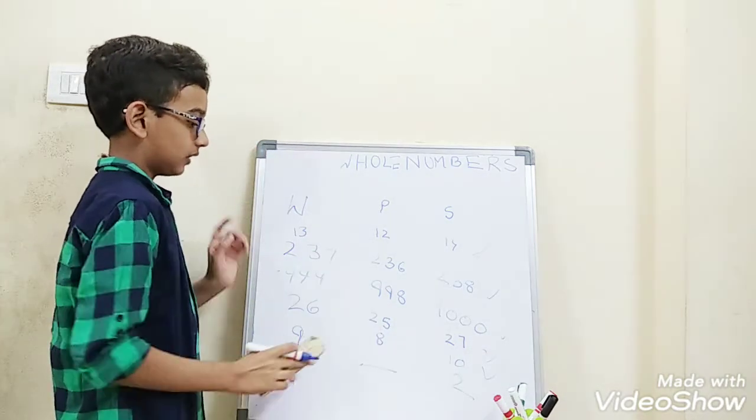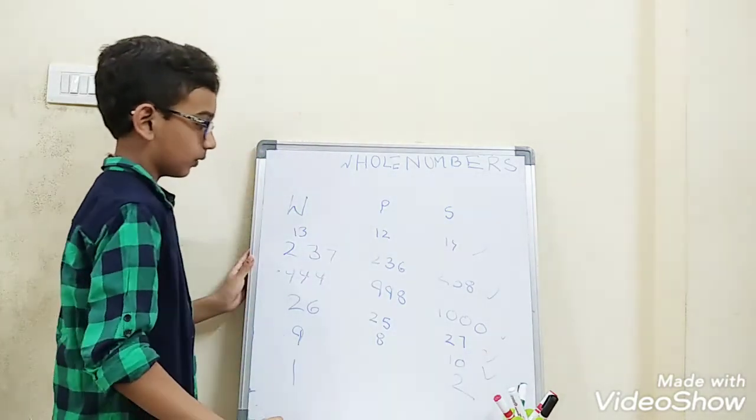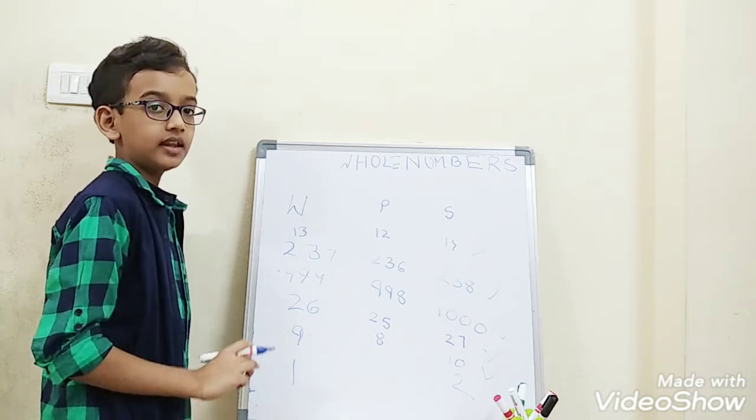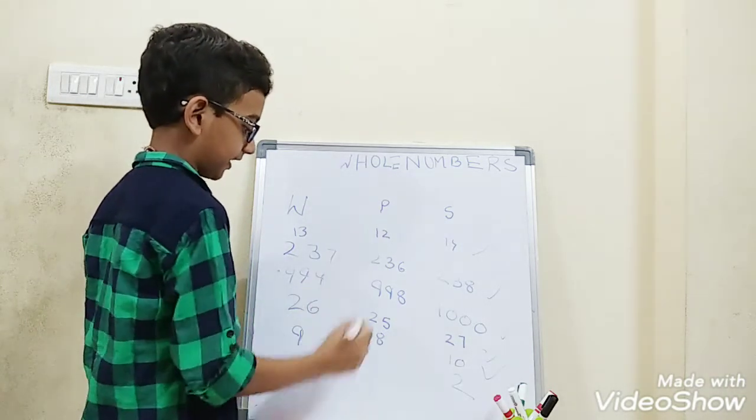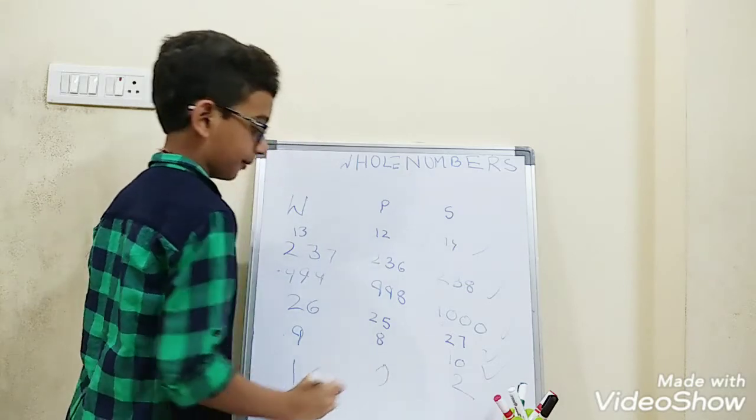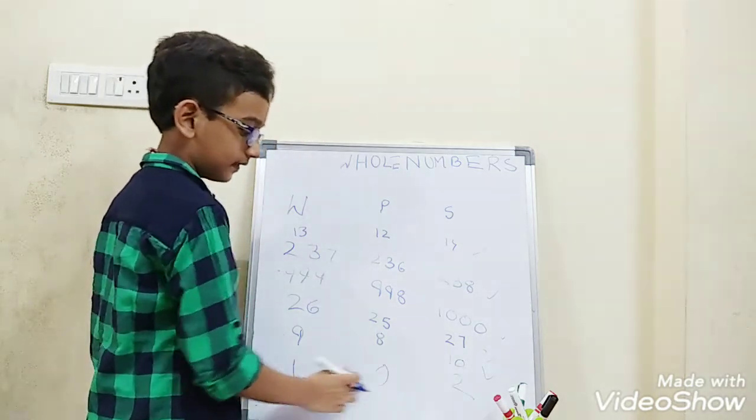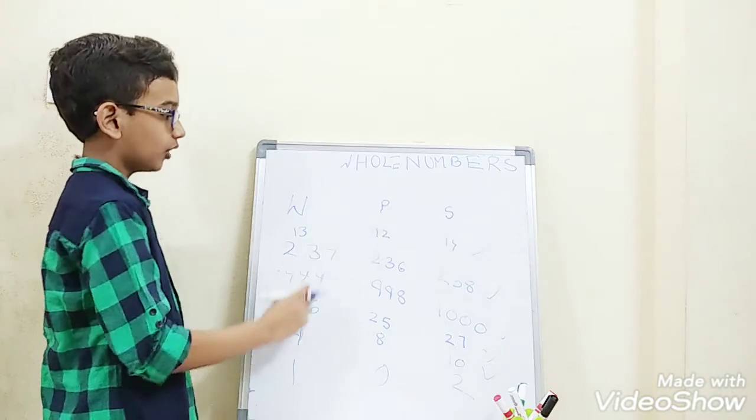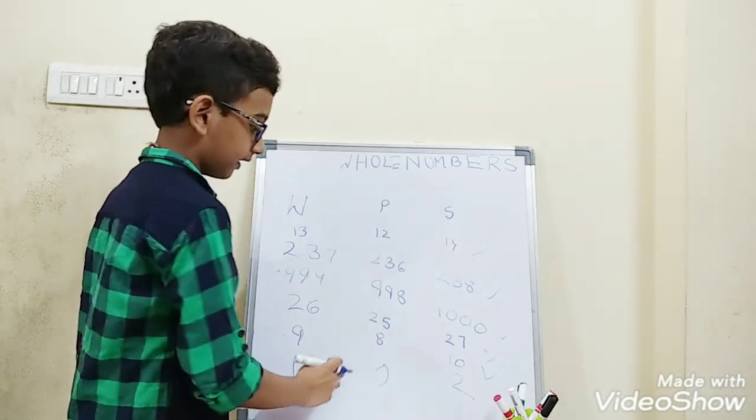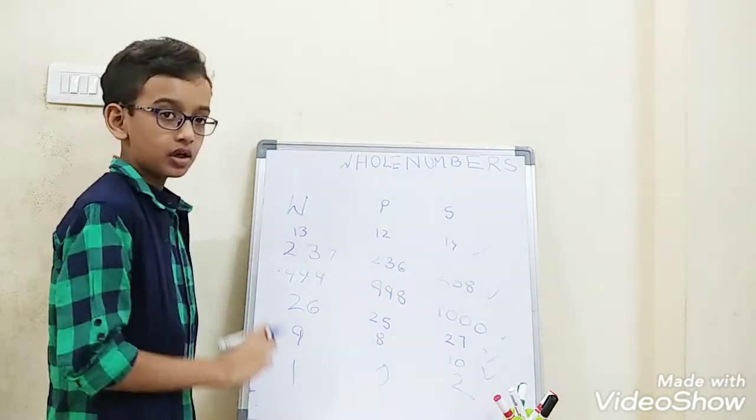But for 1, we need to include 0. 0 is included in the whole numbers. So 1 has a predecessor in whole numbers as 0. So we need to remember this 0 to be included in whole numbers.